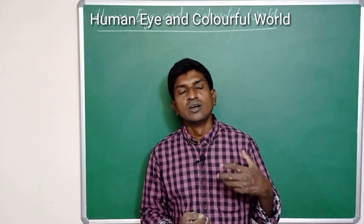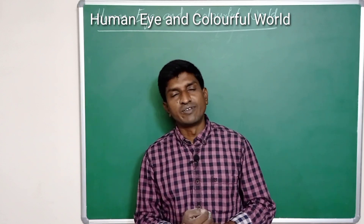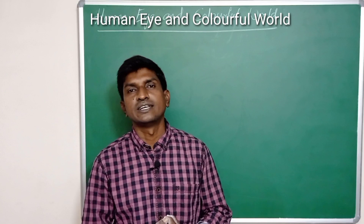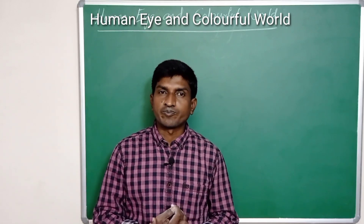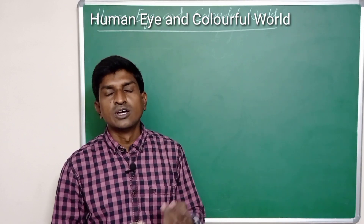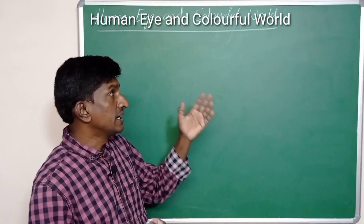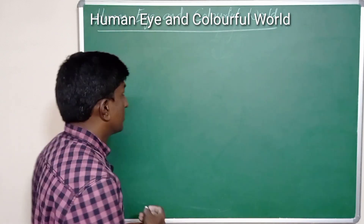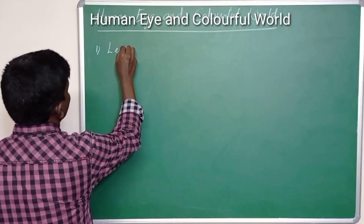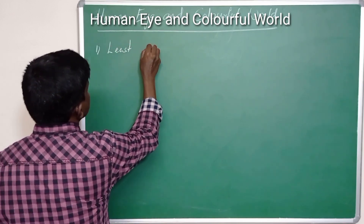We will also discuss defects of the eye lens — why some people get defects and what causes them. In this video I am going to discuss two important defects related to our human eye. The first one is the least distance of distinct vision.